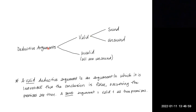If it is not the case that it is impossible for the conclusion to be false — if it is possible that the conclusion is false, still using necessary reasoning — then that argument will be considered invalid and also unsound.